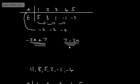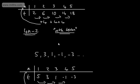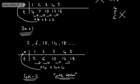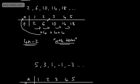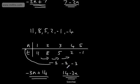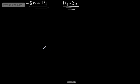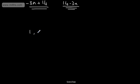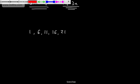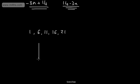So these two are slightly harder, and it's generally the case that at this particular level you'll be asked for an nth term where you have a positive quantity. So let's just do one more positive one. We're going to have another sequence: 1, 6, 11, 16, and 21. We can see that this is going to be going up by 5 each time.